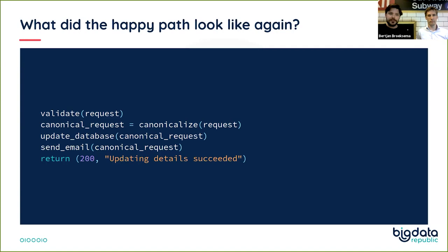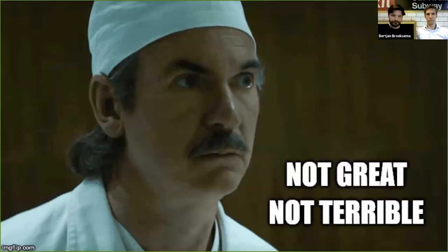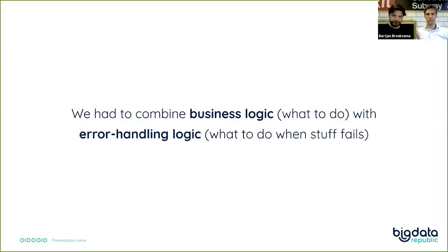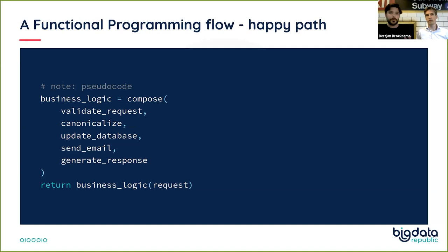So what did the happy path look like? Again, we have five lines — four of which are just basic: do this, do that, do this, do that. I would much rather write this kind of code than the error-handling-bloated version, simply because it's easier to read and easier to write. Wouldn't you much rather just write the happy path? That's one of the promises of functional programming — I could write the entire business logic as a composition of five functions and be done.